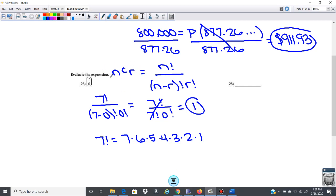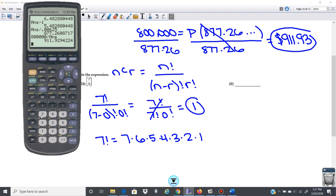The nCr is a command in our calculator. So in here, we would go 7, and then you would go math over to PRV here, and then nCr, 0, and it will do it for you. So I'll show you.